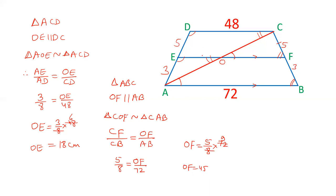OF is 45, OE is 18. This is 18, this is 45. So the length of EF will be OE plus OF. 18 plus 45, that is 63 cm. Length of EF is 63 cm by this similar triangle approach.